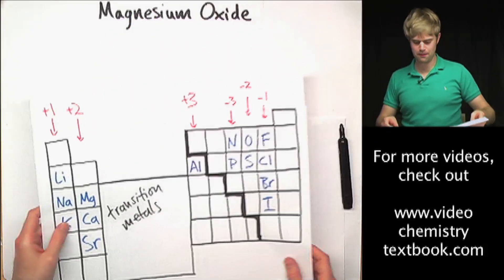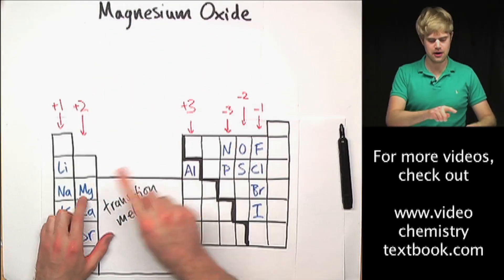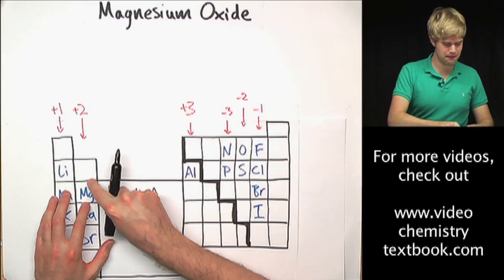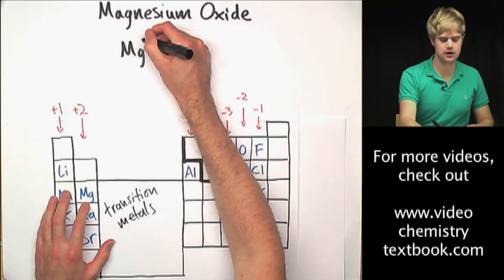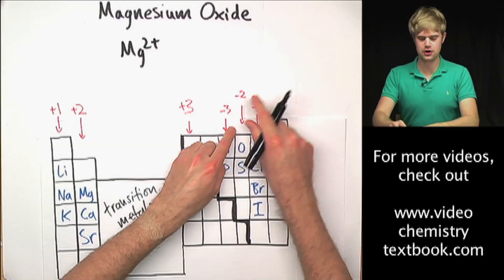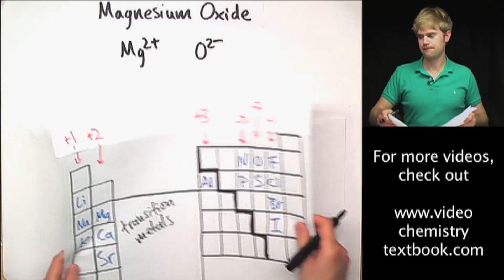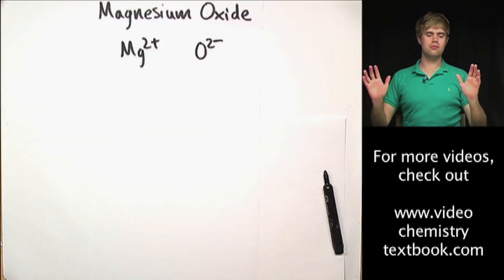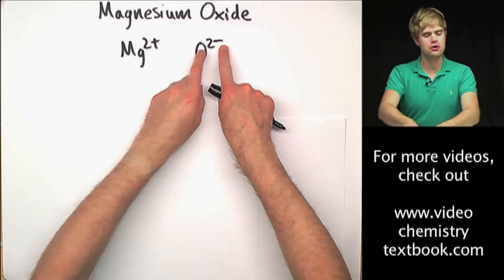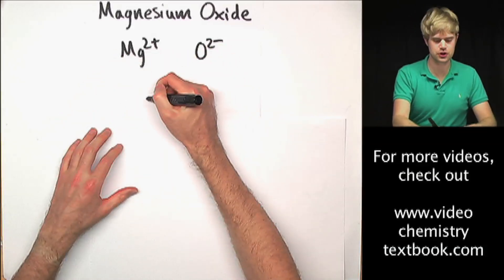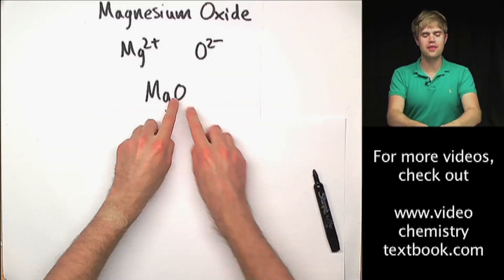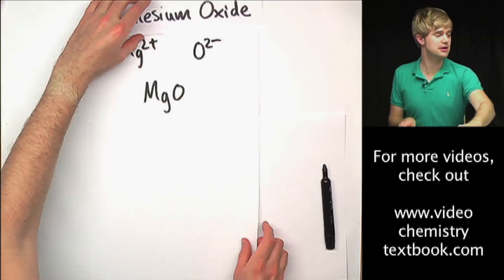Magnesium oxide: go back to the periodic table — magnesium here, oxygen here — metal, non-metal, so it's ionic, so charges are important. Magnesium is Mg²⁺; oxide is the word for oxygen when it has a charge, and it's O²⁻. How are we going to balance out the charges? They're already balanced out: 2⁺ and 2⁻, so I don't have to add more of either atom. So I can just write MgO — remember, don't write Mg₁O₁; without a subscript it just means you have one atom. So that's magnesium oxide.